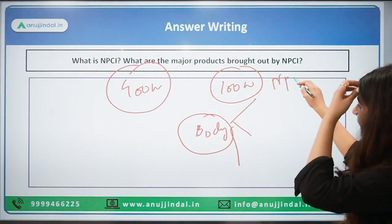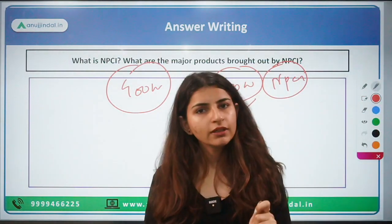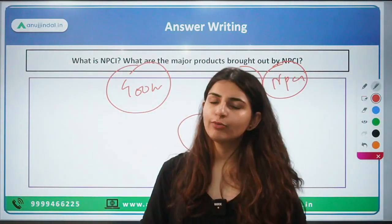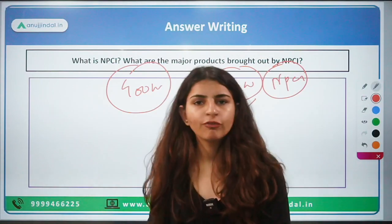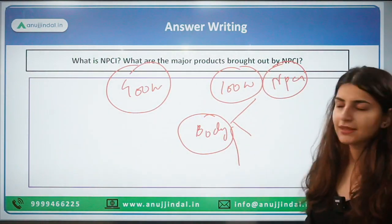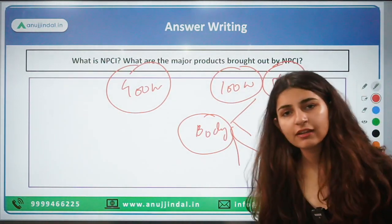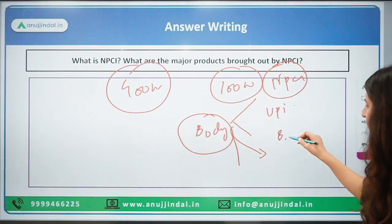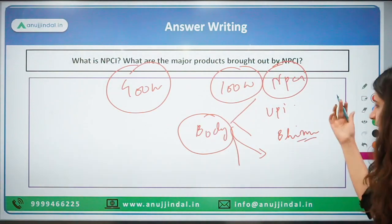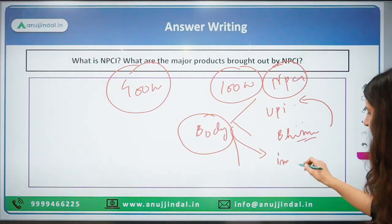In the body, we'll recall major products of NPCI and write one or two lines about each. There are many products, so focus on the major ones. The first I can think of is UPI — Unified Payment Interface — then BHIM: Bharat Interface for Money, an app through which UPI transactions can take place. Then IMPS.